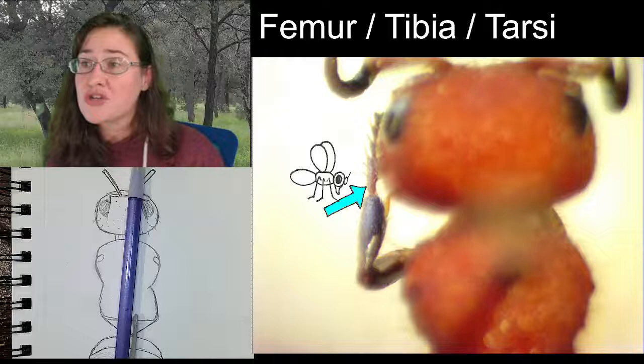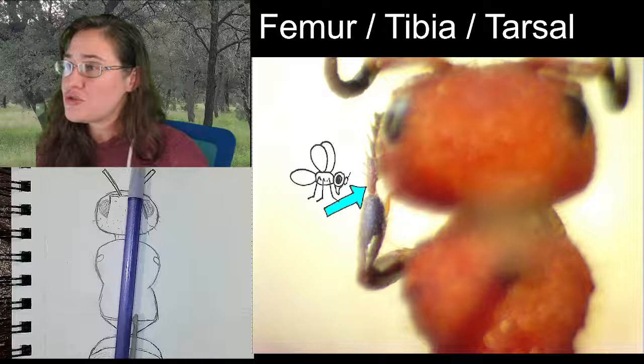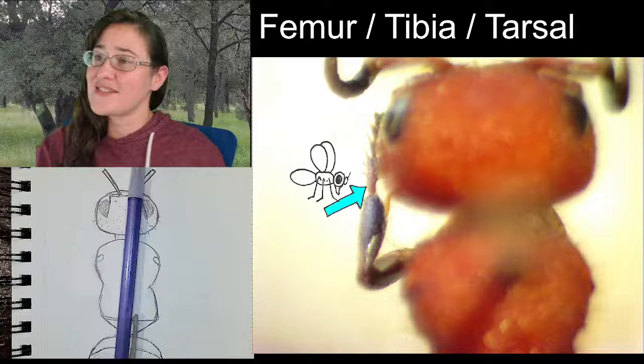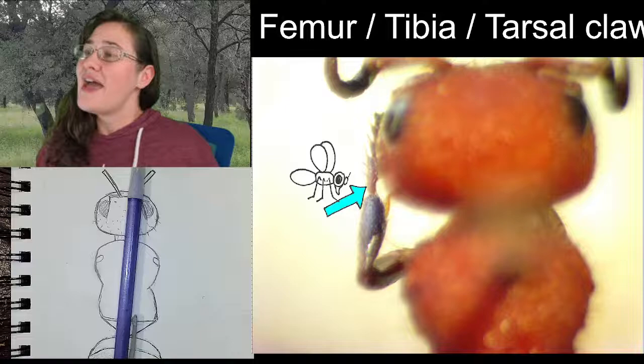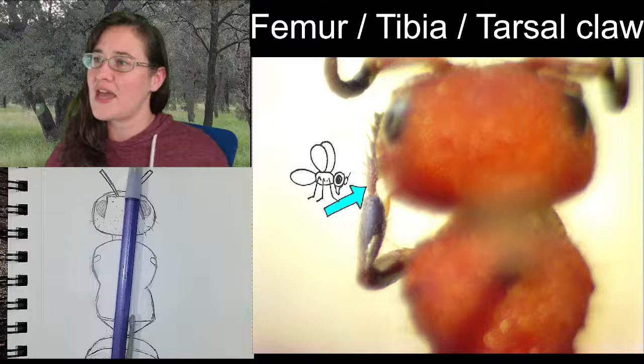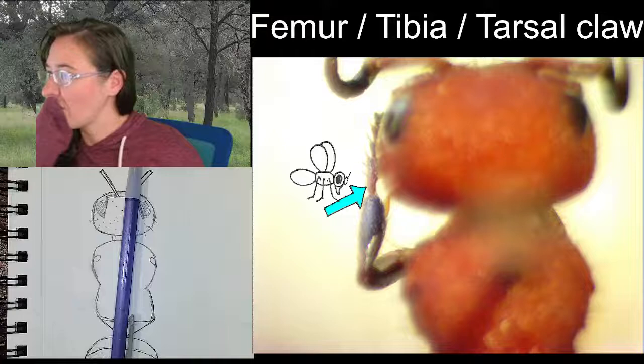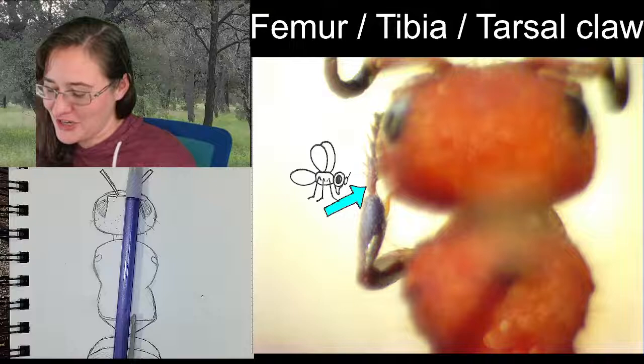If you wanted to say an individual tarsal segment, the word changes from 'tarsi' with an I to 'tarsal' with A-L. So you can say 'the second tarsal segment' or 'it has five tarsi.' And then at the very end of the leg you've got the tarsal claw — most of the time it's two claws at the end of the leg.